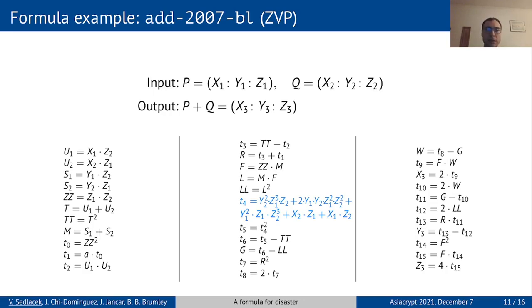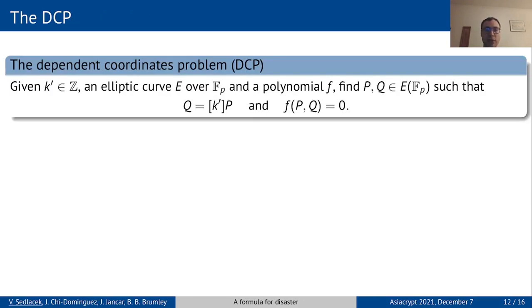So let us try to formalize what's going on. We are given a scalar K', an elliptic curve, and a multivariate polynomial F. The number of variables might depend on actual point representation. The goal is to find two curve points P and Q, whose coordinates are roots of F such that Q is K' times P.